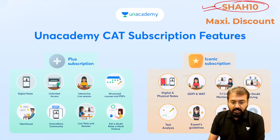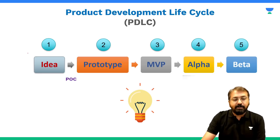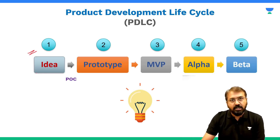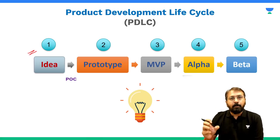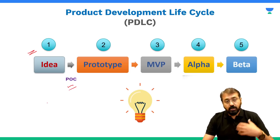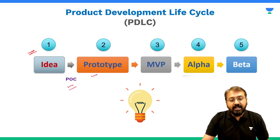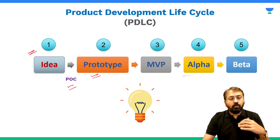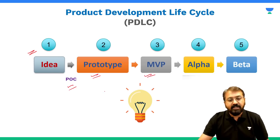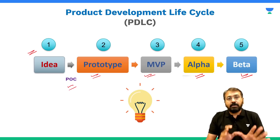Let's quickly understand the product development life cycle. It starts with idea creation — you might have different ideas, among them you pick one. Then you check the proof of concept, meaning you check the feasibility of your idea. Then you create the prototype. Once the prototype is created, you create the MVP. Then comes alpha, and then comes beta — which is almost like the final version of the product.